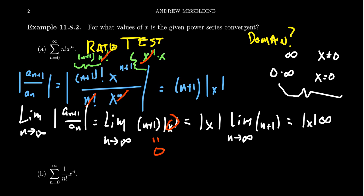So what's the domain? For example A, the domain turns out to be just the single number 0. When X equals 0, plugging 0 into this series gives 0 times N factorial, which is 0, and the sum of infinitely many zeros is 0 — so the series converges at 0. Notice that 0 is actually the center of this power series, and you'll see that the center of a power series is always part of its domain. But here, that's the only element we get.